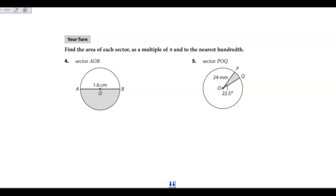Okay, your turn number four. We're going to find the area of each sector, as a multiple of pi or in terms of pi, and to the nearest hundredths. When I look at number four, I see that I have a diameter, and I need a radius.